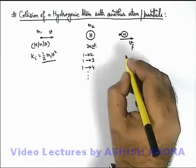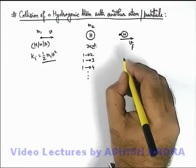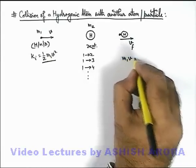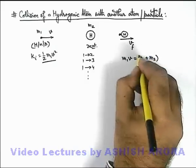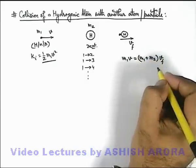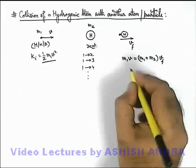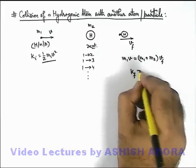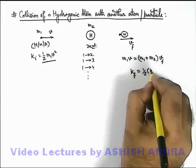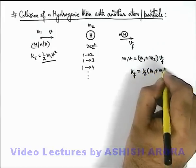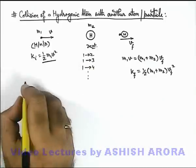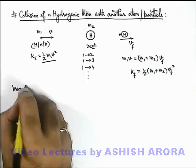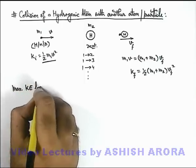Here momentum must always be conserved as no external forces are acting, so here we can write m1 v is equal to (m1 plus m2) multiplied by v final. And in this situation, the final kinetic energy in the case will be half (m1 plus m2) multiplied by v final squared. So in this situation we can calculate maximum kinetic energy loss.